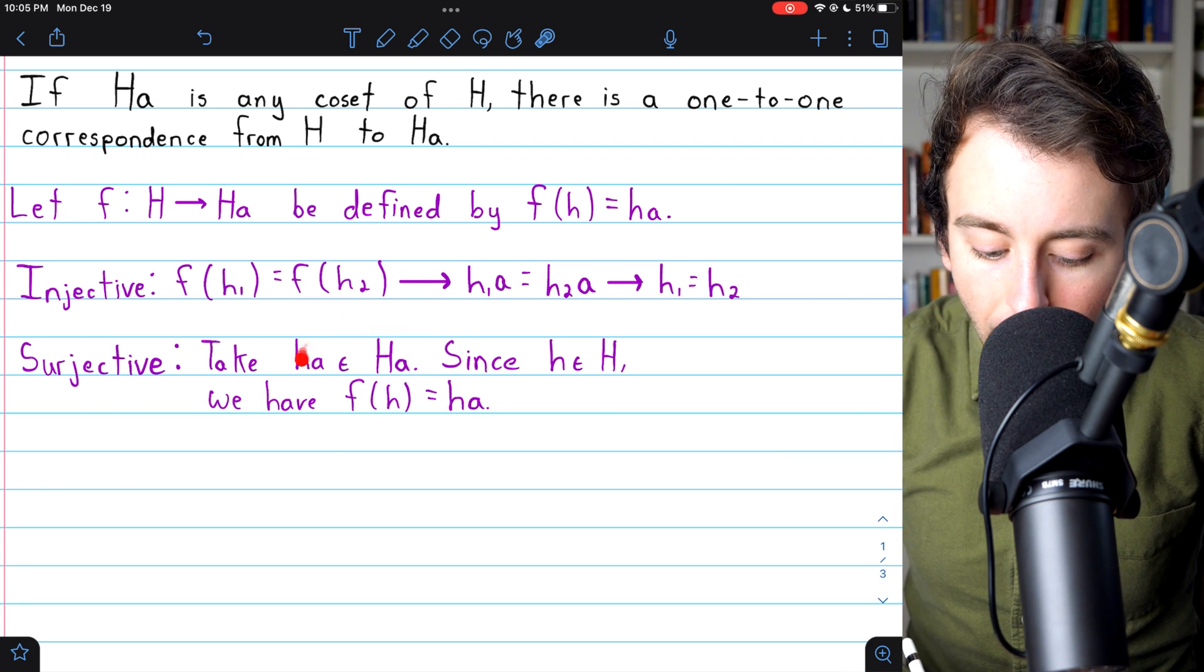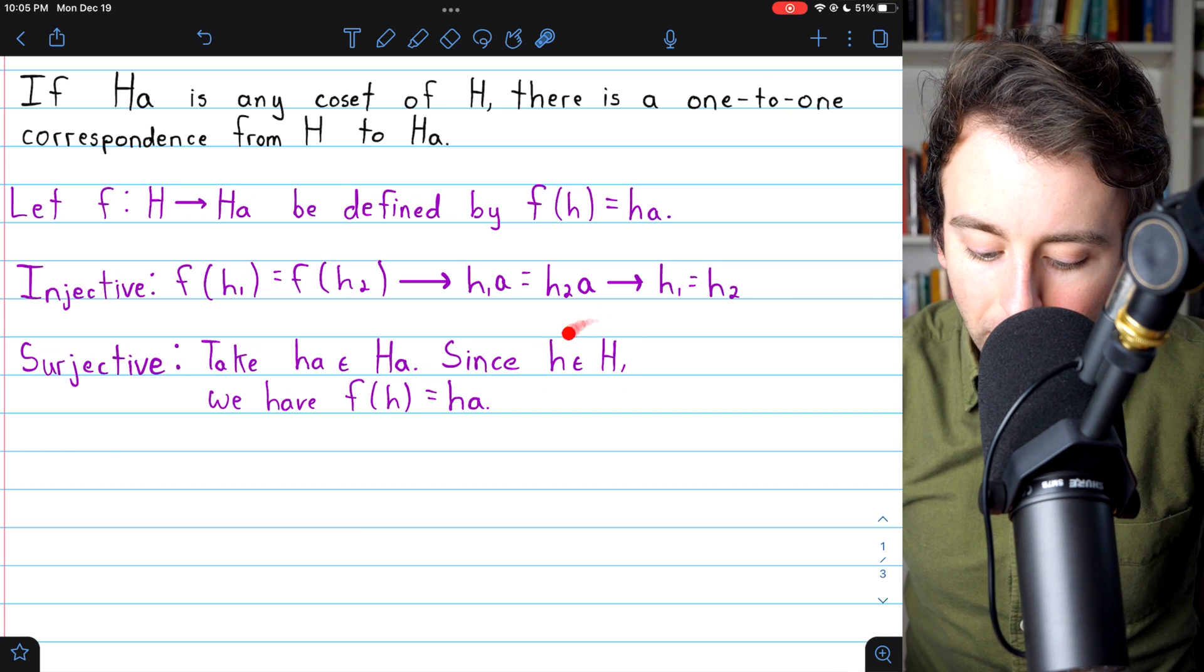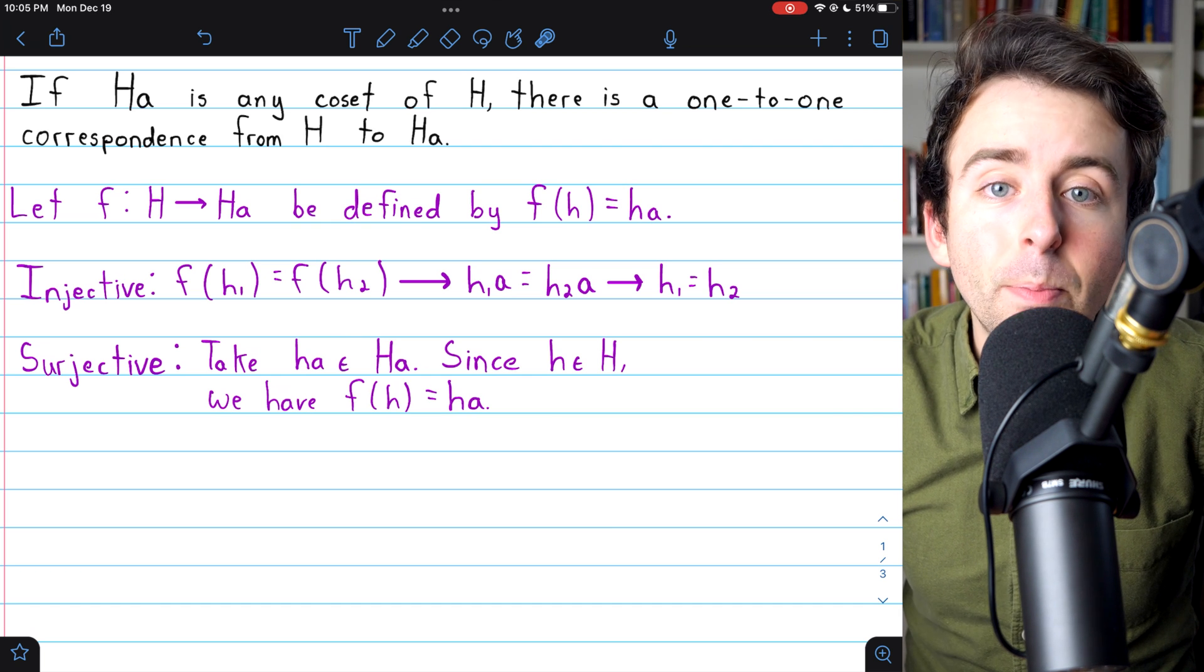So in fact, any element of the codomain is the image of some element of the domain. Thus F is surjective, so it is a bijection.